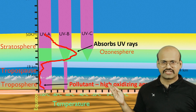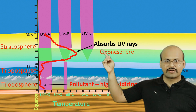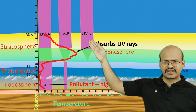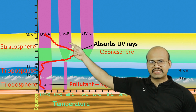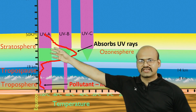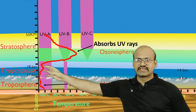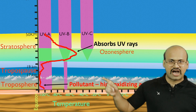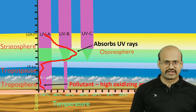In the stratosphere, ozone protects us from UV rays. It absorbs UV-C rays, which are the most energetic ultraviolet rays, while it partially absorbs UV-B rays, and it allows UV-A rays to reach Earth. UV-A rays are the least energetic and least harmful. So the harmful UV rays are absorbed by our ozone layer.